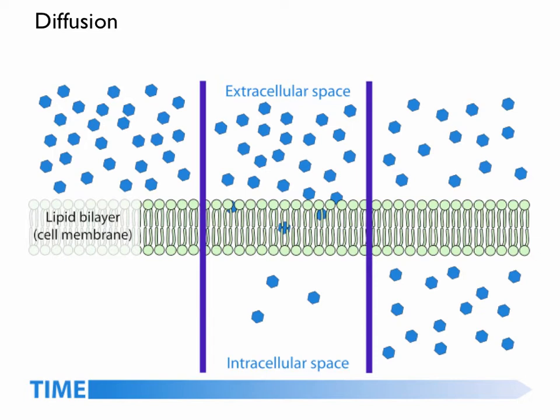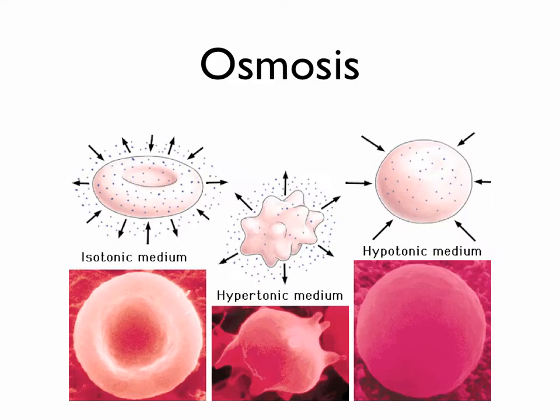A lot of particles, particularly solutes, will pass through the cell membrane going from high concentration to low concentration. Osmosis is another way that the cell can bring substances in or have substances leave — osmosis is specific to water. Cells can experience all kinds of problems if they're not in a solution that is isotonic to the solution inside the cell; they could lose or gain water if the outside solution differs from inside.